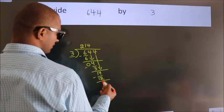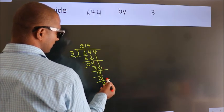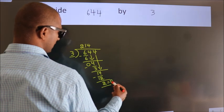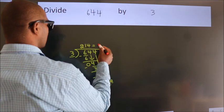After this, no more numbers to bring it down. So, we stop here. This is our remainder. This is our quotient.